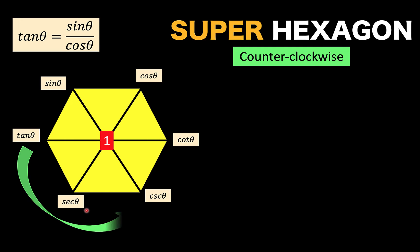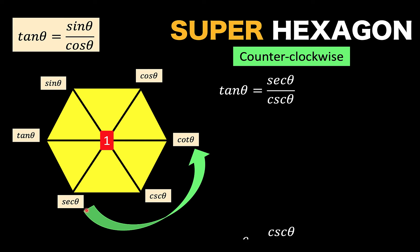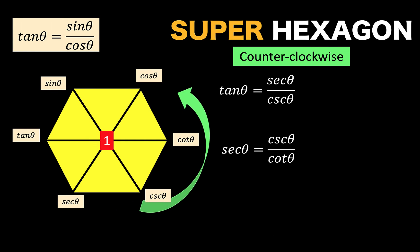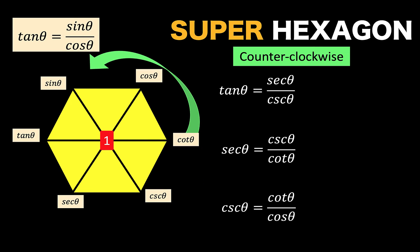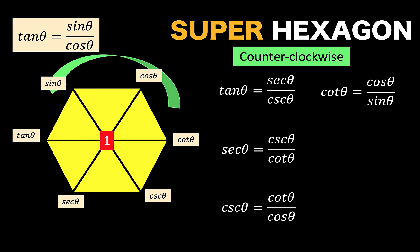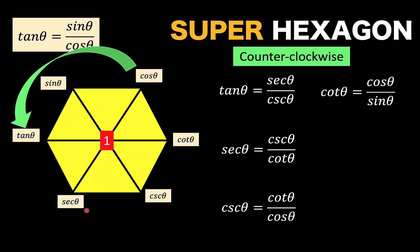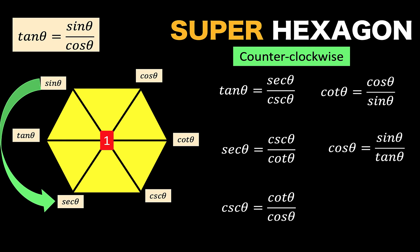Next, if we move in the counterclockwise direction, we still follow the same pattern: tangent equals secant over cosecant, and secant equals cosecant over cotangent. Following the same process generates another six trigonometric identities by moving the arrow counterclockwise.